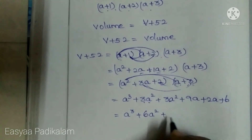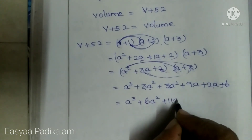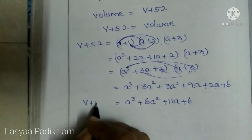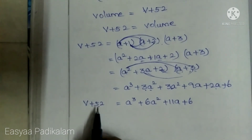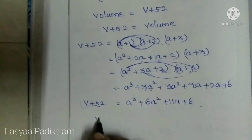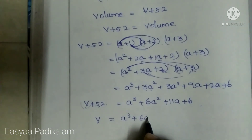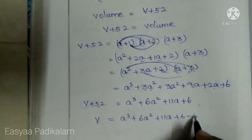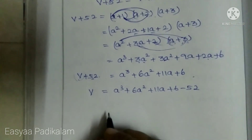We get 3a² + 11a + 6. Connecting to V plus 52 equal to a³ + 6a² + 11a + 6. So V is equal to a³ + 6a² + 11a + 6, minus 52.